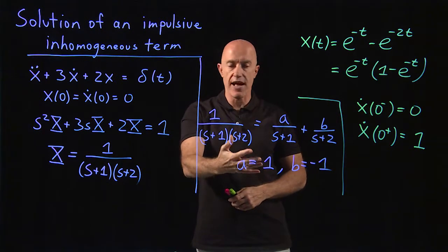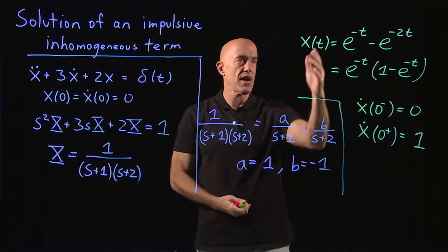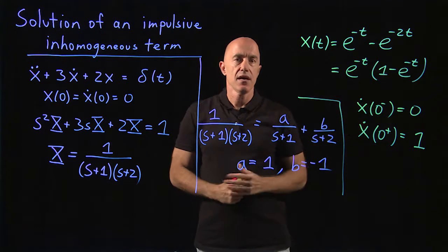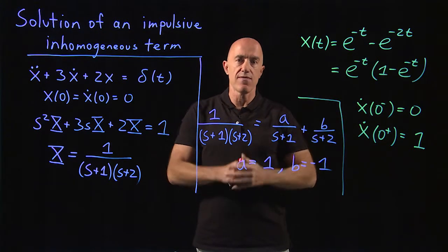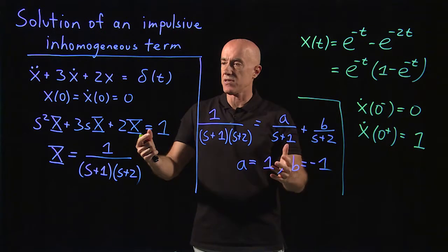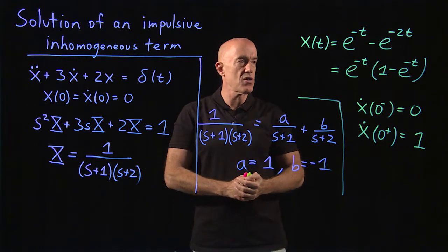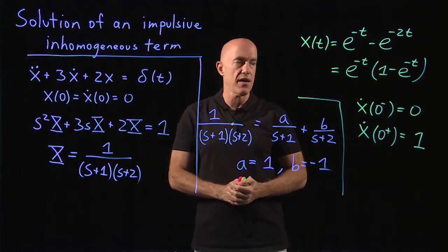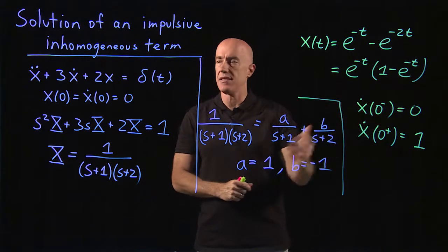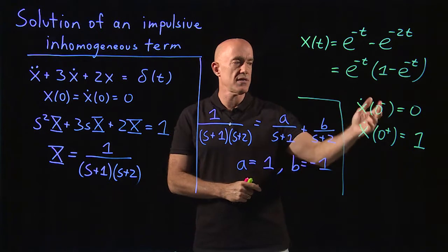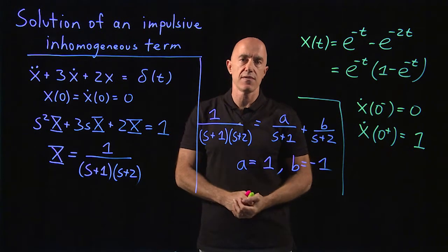Then we can use a partial fraction expansion to write down x of t. Pretty straightforward, the direct delta function makes it very easy to do integrals. The only thing that's tricky here is that you notice that the impulse force causes a discontinuity in the velocity.